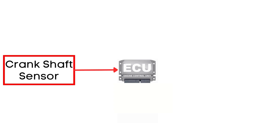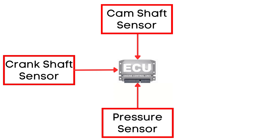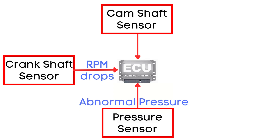Now let's dive into why P0302 gets triggered. The Engine Control Unit, or ECU, monitors signals from the Crankshaft Position Sensor, Camshaft Position Sensor, and Cylinder Pressure Sensor. These sensors provide real-time data about your engine's performance. When a misfire occurs, it causes the engine's RPM to drop abruptly, and the pressure inside the cylinder becomes abnormal.